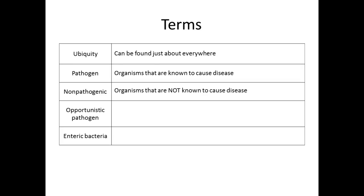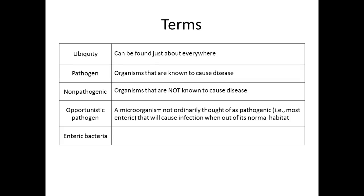An opportunistic pathogen requires some type of condition — an opportunity for it to cause disease. Ordinarily it's not considered pathogenic, but it will cause disease when it's out of its normal habitat. The most common offenders for humans that are what we refer to as opportunistic pathogens are enteric bacteria.